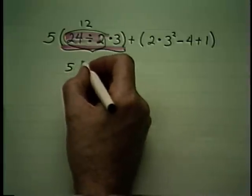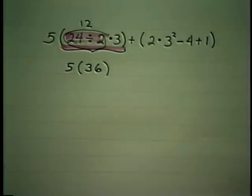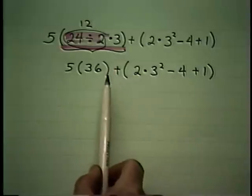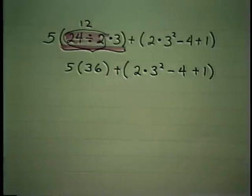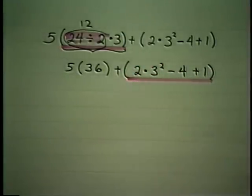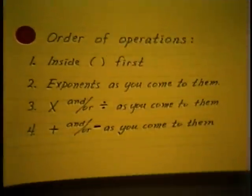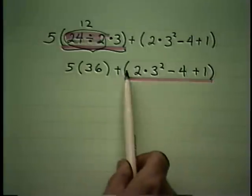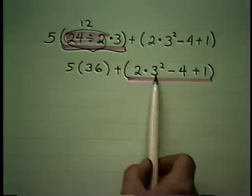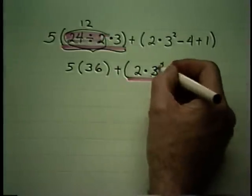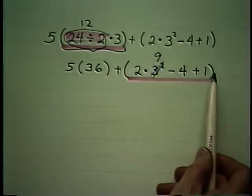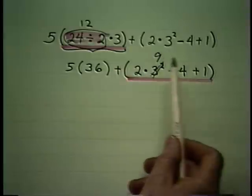Now, to keep from becoming confused, let's just copy the rest of the problem. Now that we've reduced the first parentheses to a single number, we start looking for more parentheses — and that would be this one. Now that we're inside, back to the beginning, look for exponents as you come to them. There's a multiplication — that's not an exponent — but that is: it's above the 3. So let's take two 3s and multiply them: 3 times 3 is 9. That becomes replaced by 9. Continue looking for more exponents to the end of the parentheses — there aren't any.